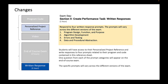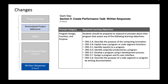Now let's take a look at those four categories in detail. Good news — the requirements for the project have loosened up big time. I think this is good; it allows students to get more creative with their projects. Here's the first category: program design, function, and purpose. Students should be prepared to respond to prompts that assess any of the following learning objectives. These are very straightforward: describe the purpose of the computing innovation; explain how a program or code segment functions; identify inputs to a program; identify outputs produced by a program; develop a program using a development process; design a program and its user interface; describe the purpose of the code segment or program by writing documentation.